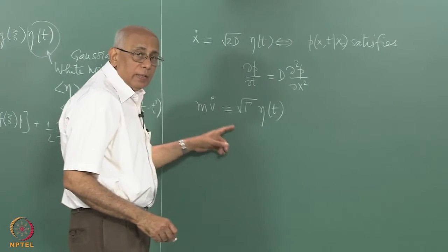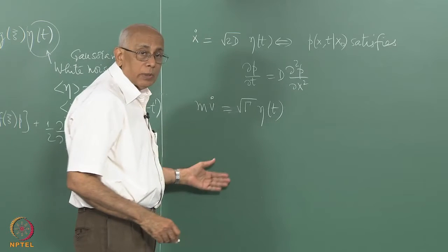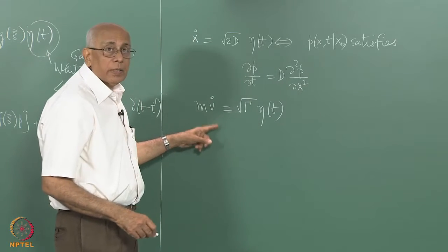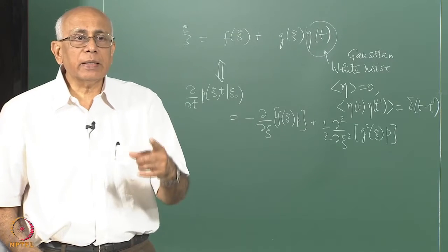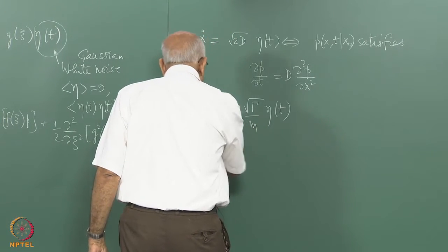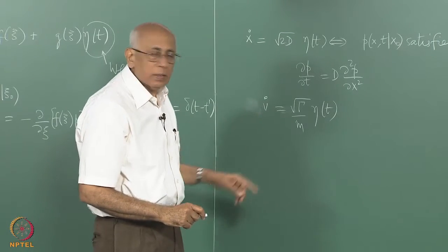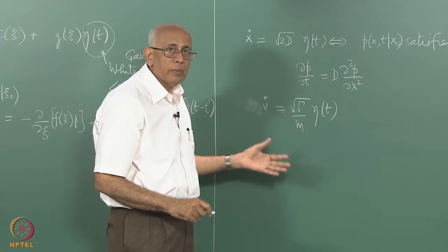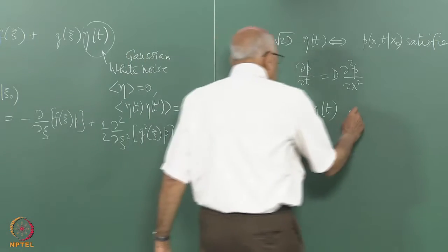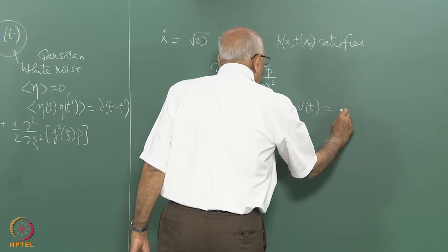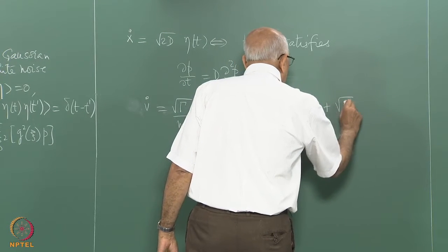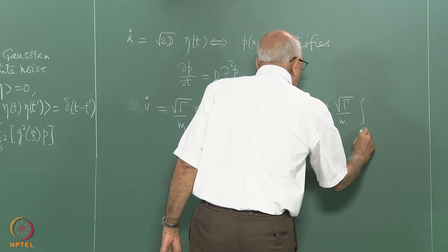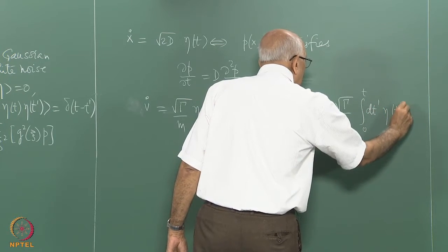This immediately implies a Fokker-Planck equation for the velocity distribution function. But instead of writing that down right away, let's take this stochastic equation seriously and ask whether it makes physical sense. The formal solution is v(t) = v_0 + sqrt(gamma)/m * integral from 0 to t of dt' eta(t').